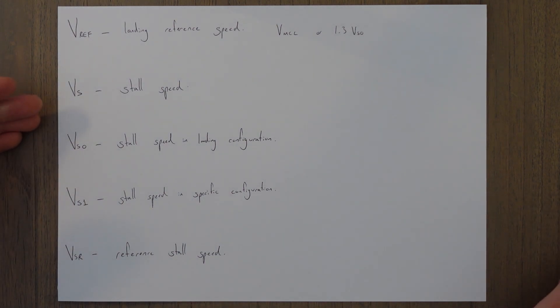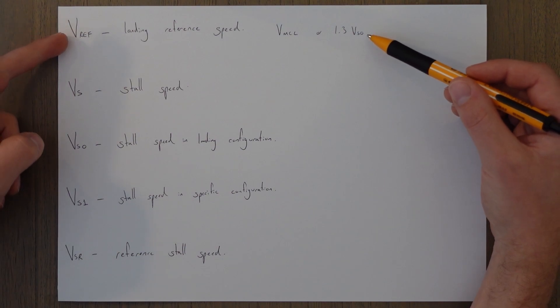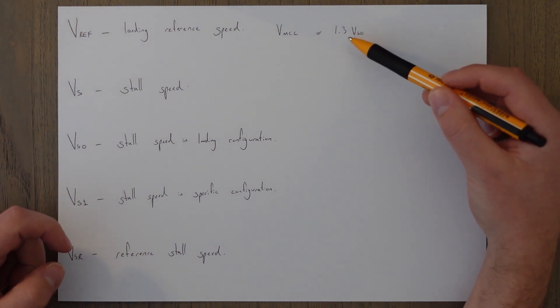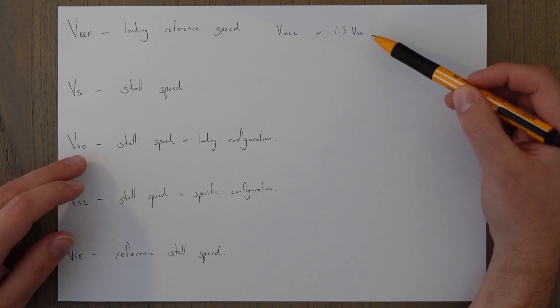So VS is the stall speed or minimum steady flight speed which the aircraft is still controllable and it's usually when you're within the clean configuration, so flaps up and the gear up as well. VSO is the stall speed in the landing configuration. That's what we're doing here with the VREF speed, we're creating a sufficient buffer above the stall speed in the landing configuration.